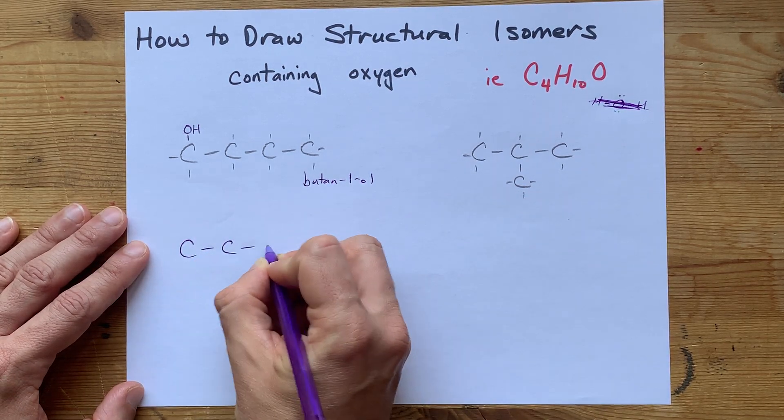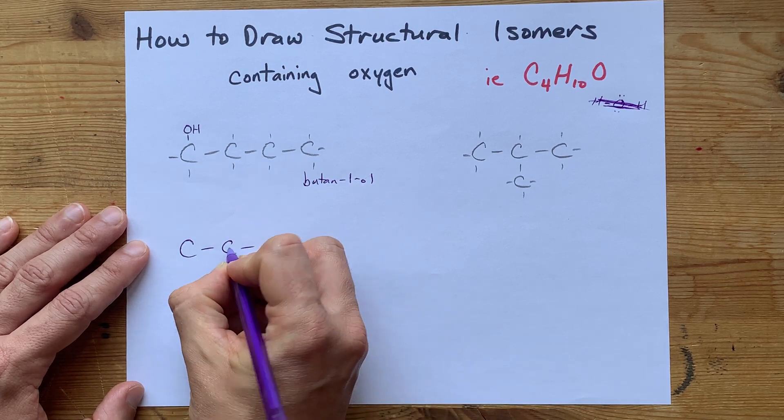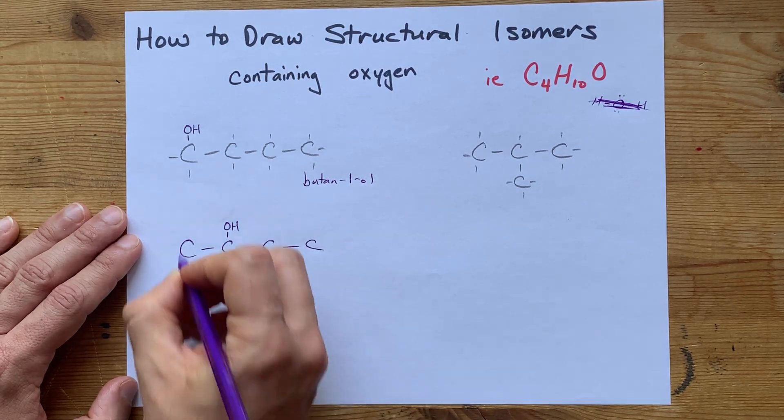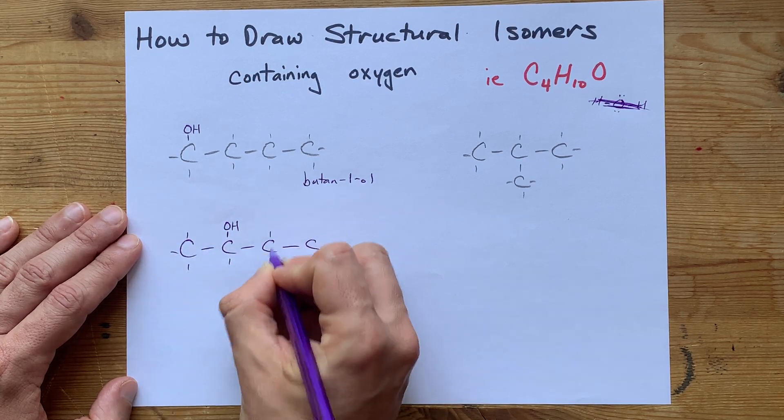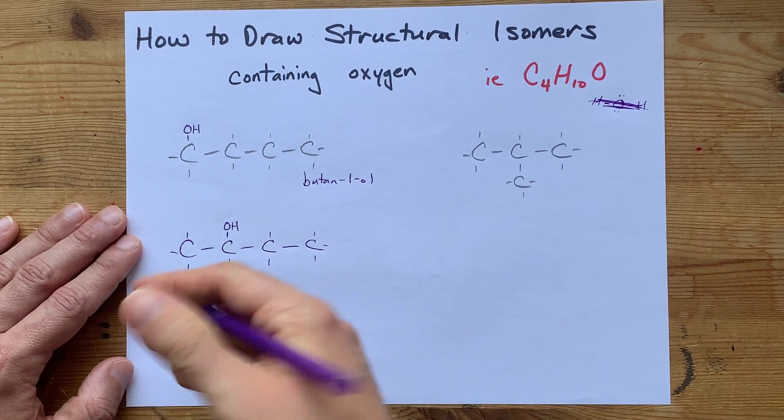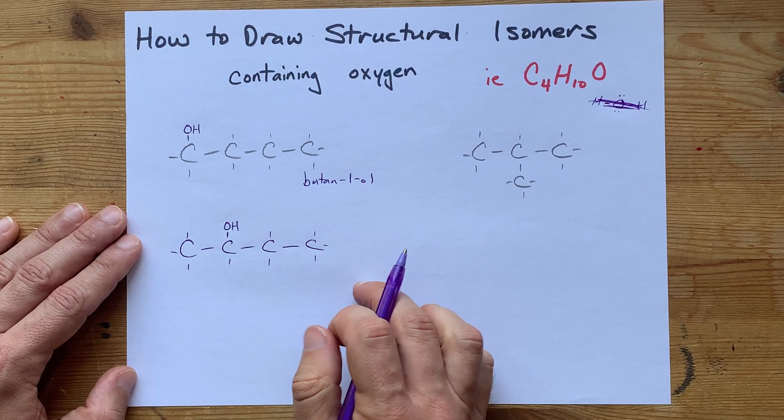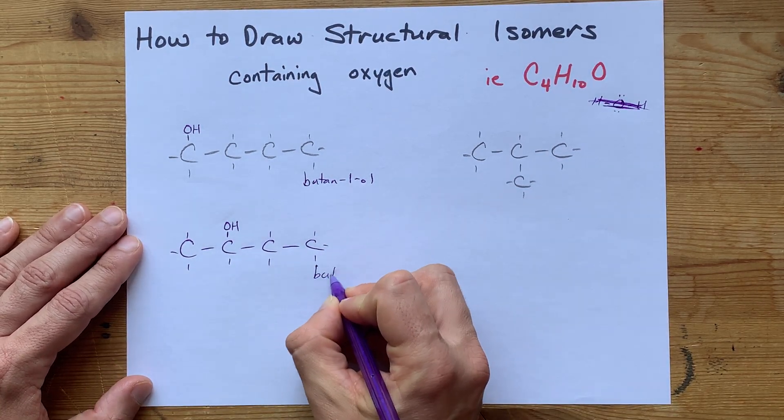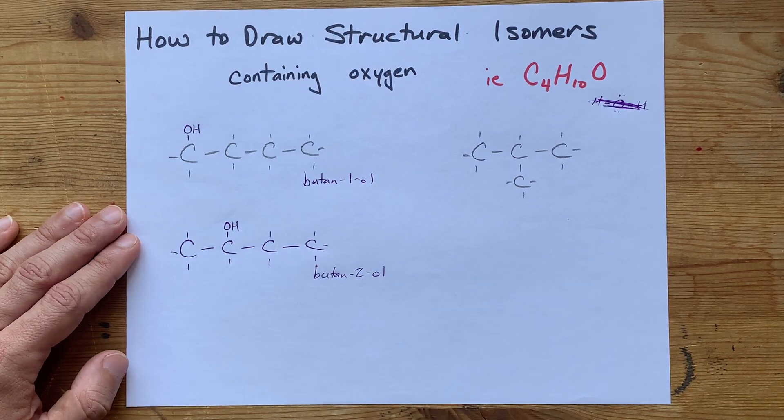What if I inserted the oxygen between the carbon and the hydrogen here at the second position? Counting the hydrogens: 1, 2, 3, 4, 5, 6, 7, 8, 9, 10. I still have 10 hydrogens, 4 carbons, and I've inserted the oxygen. Butane 2-ol is another option.